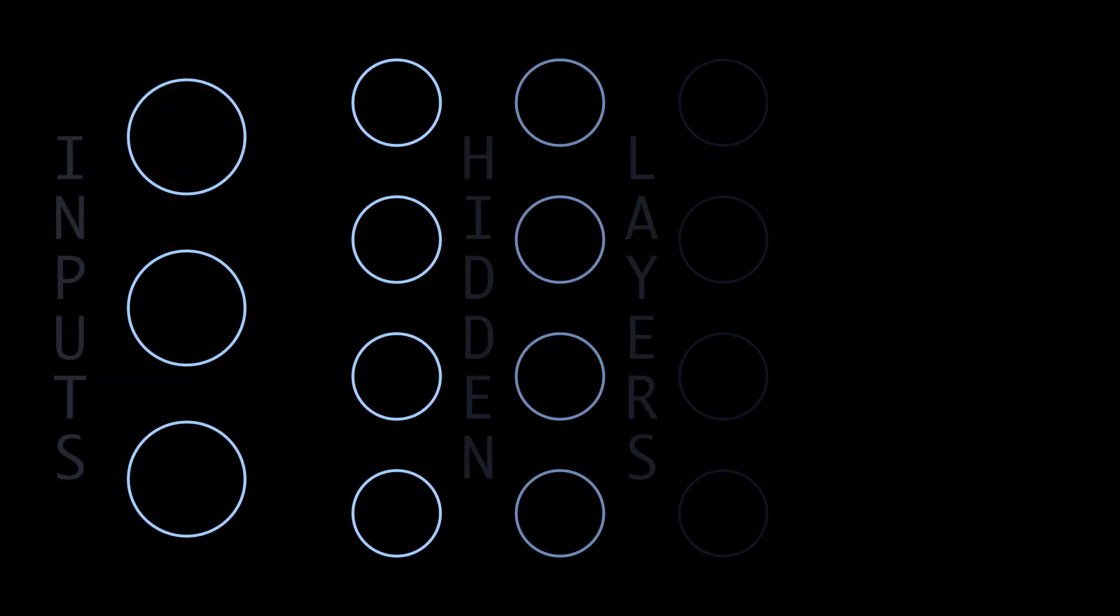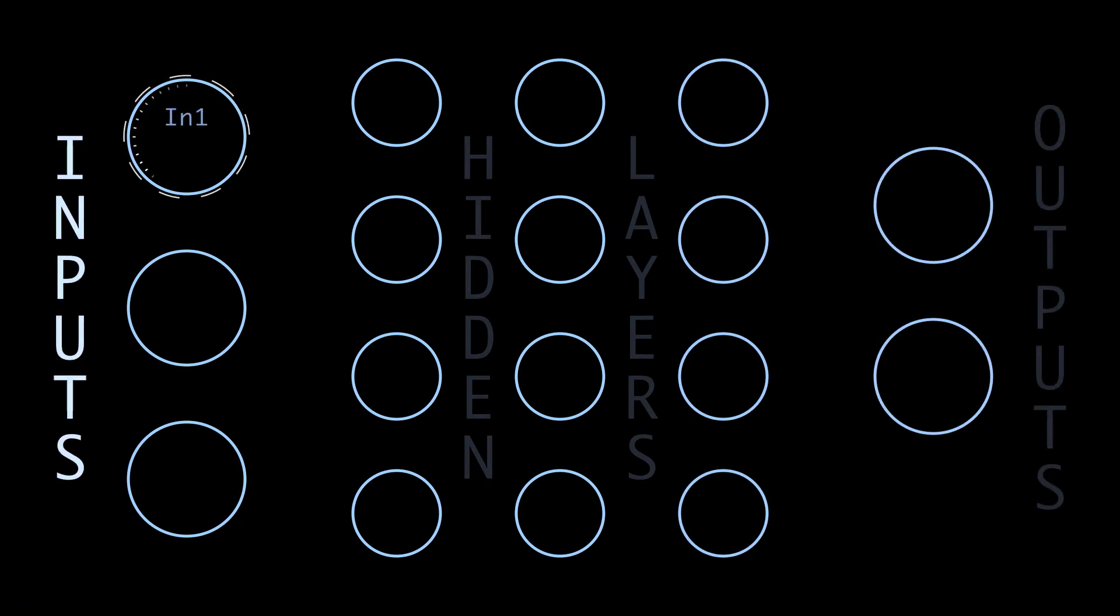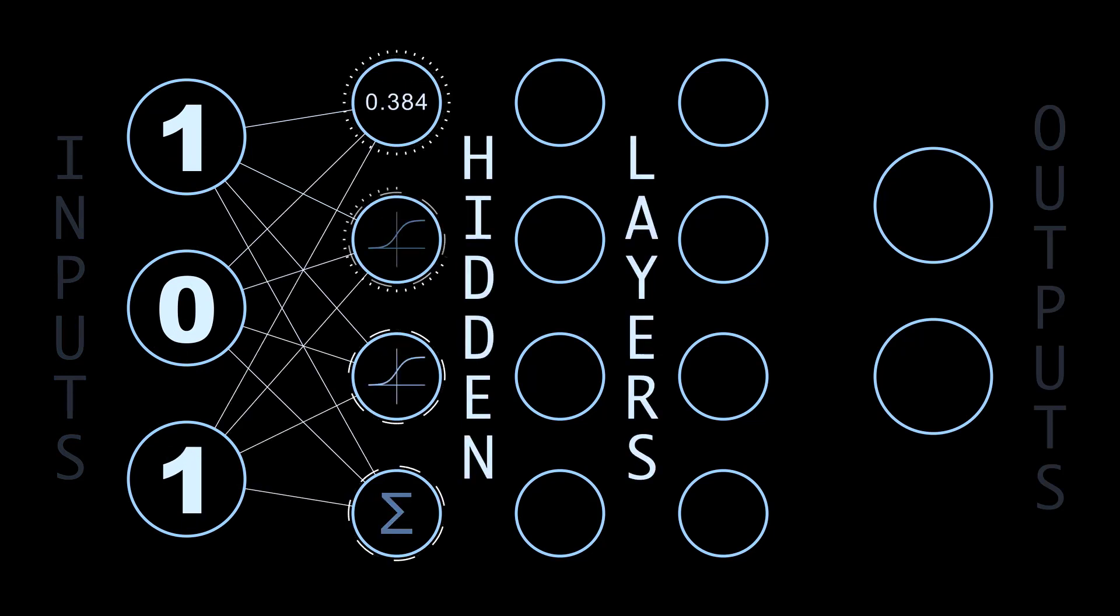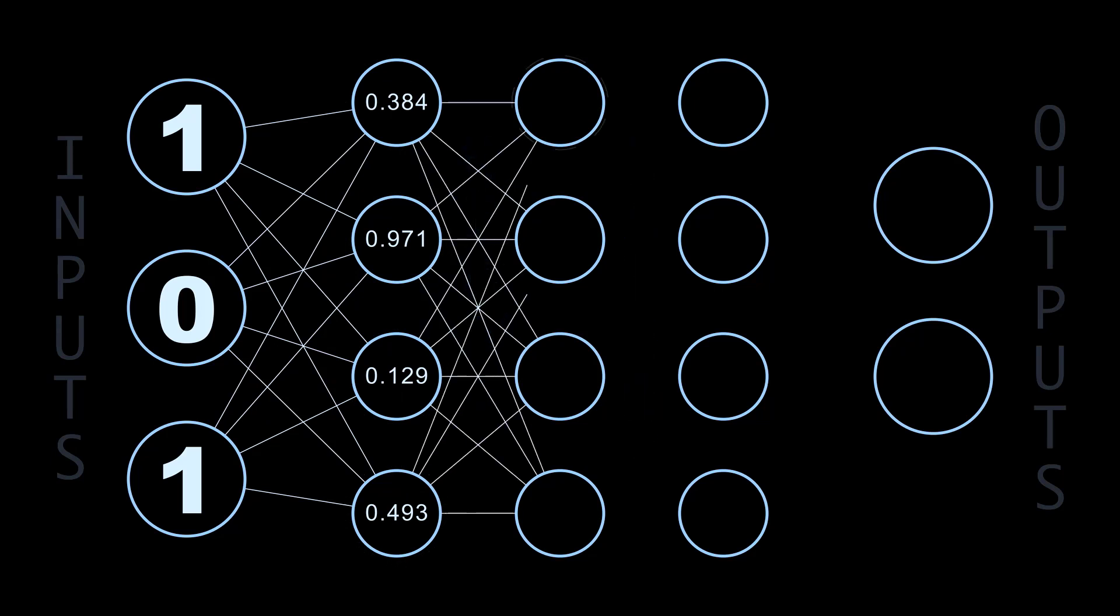So again, we start with a set of inputs, which represent the information we have that we want to make some sort of decision based on. Those input signals get fed into one or more layers that are all interconnected, with various weights between them, where every neuron is adding up the signals coming into them, and using them to decide what signal to send out, if any.